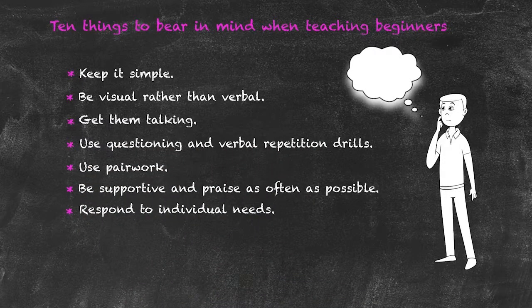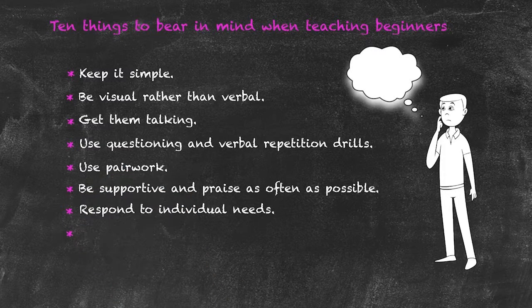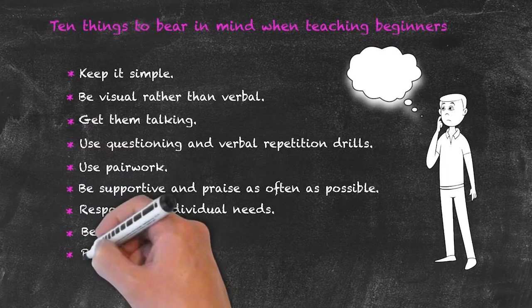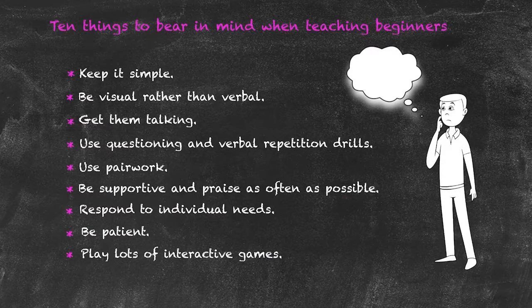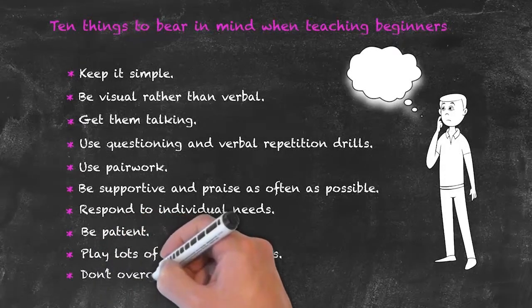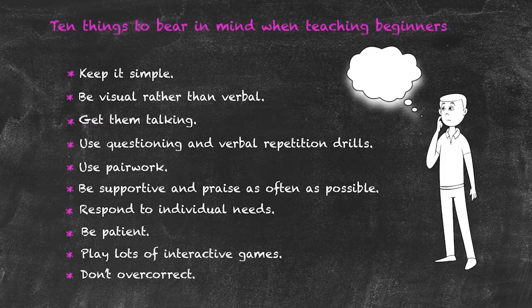Always respond to the individual needs of students, as there will be a wide range at the beginner level. Be very patient — you cannot expect students to pick up everything immediately and must be prepared to cover material again. Play lots of games, as interactive games get students talking in realistic contexts. Finally, do not overcorrect — students' confidence can drop quickly if every mistake is corrected. Making mistakes is part of the learning process, so correct only where absolutely necessary.